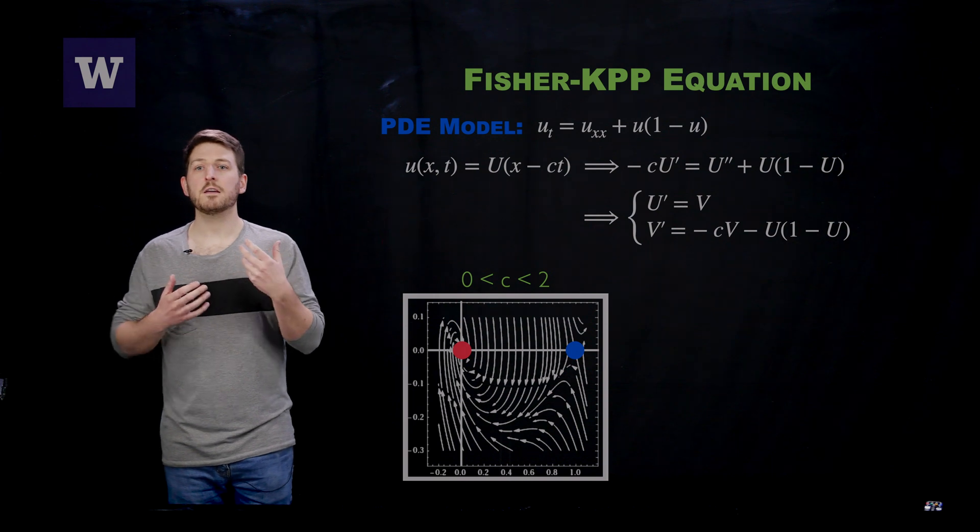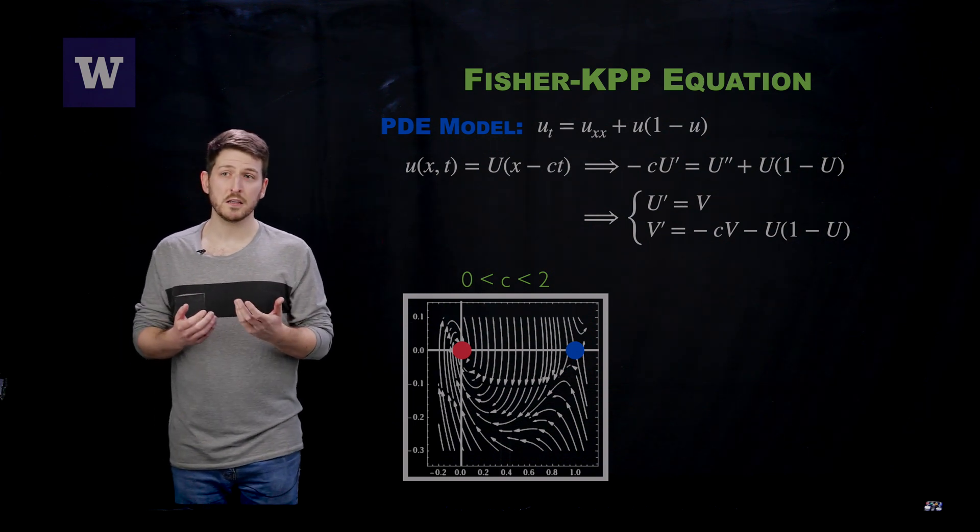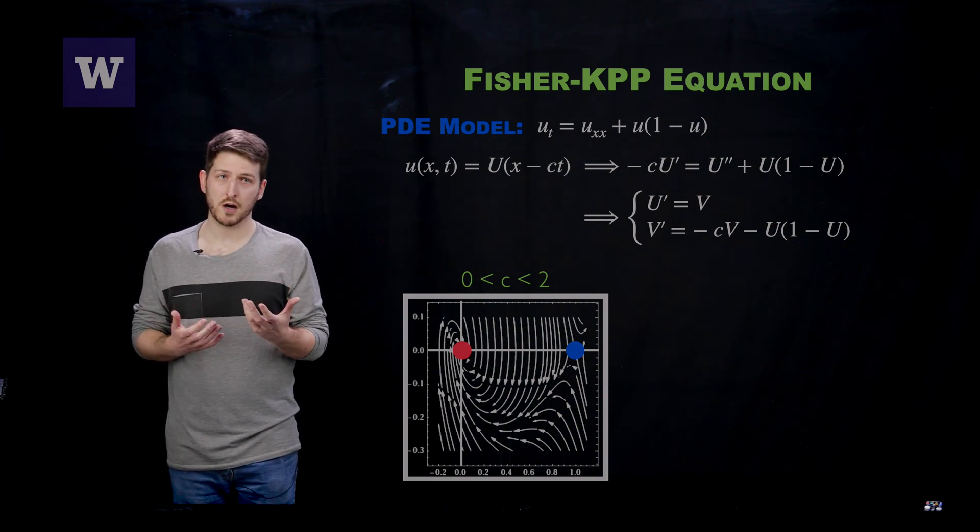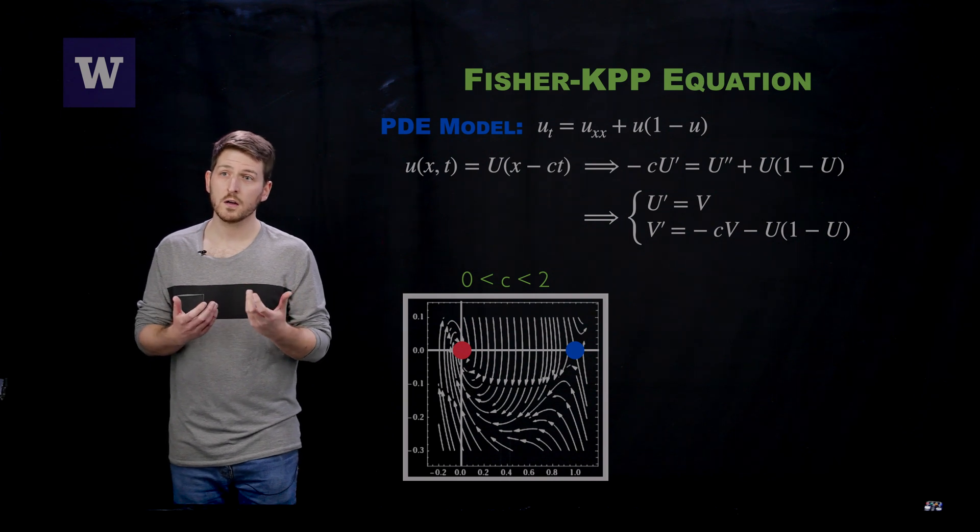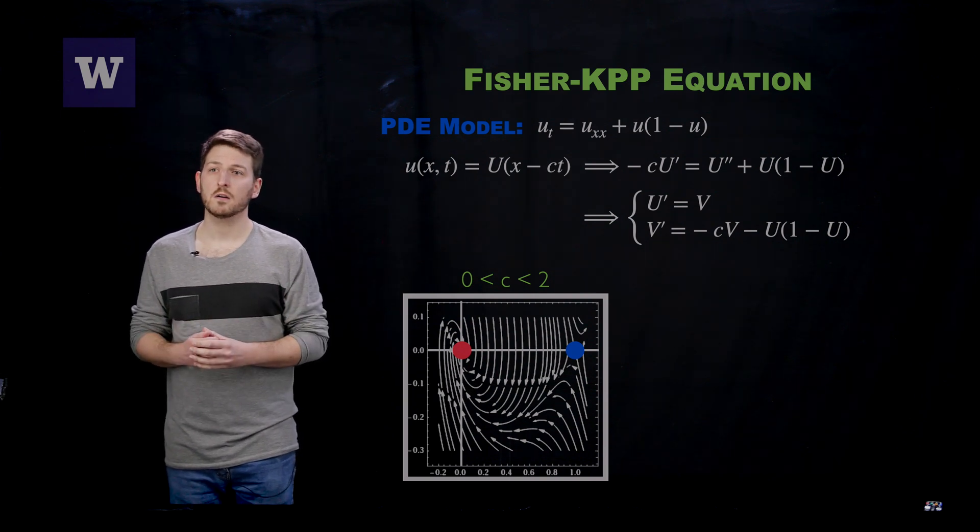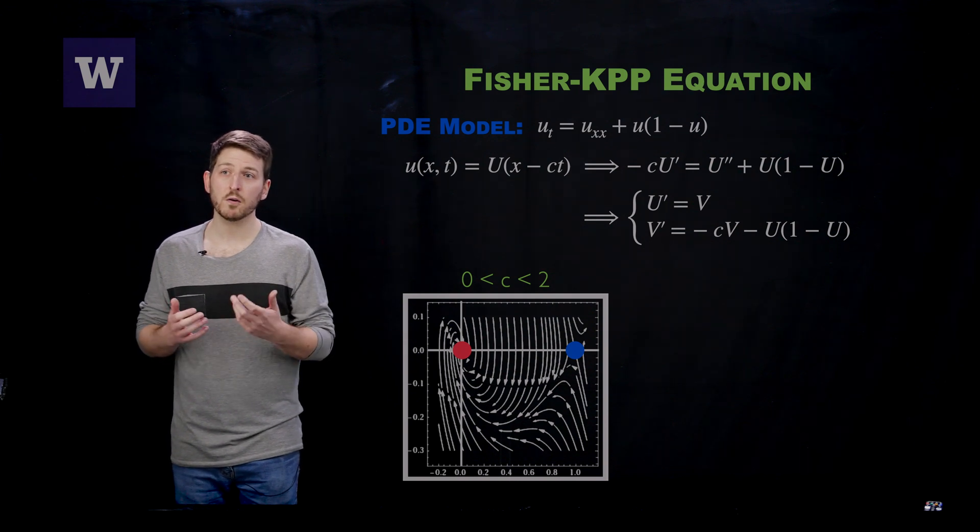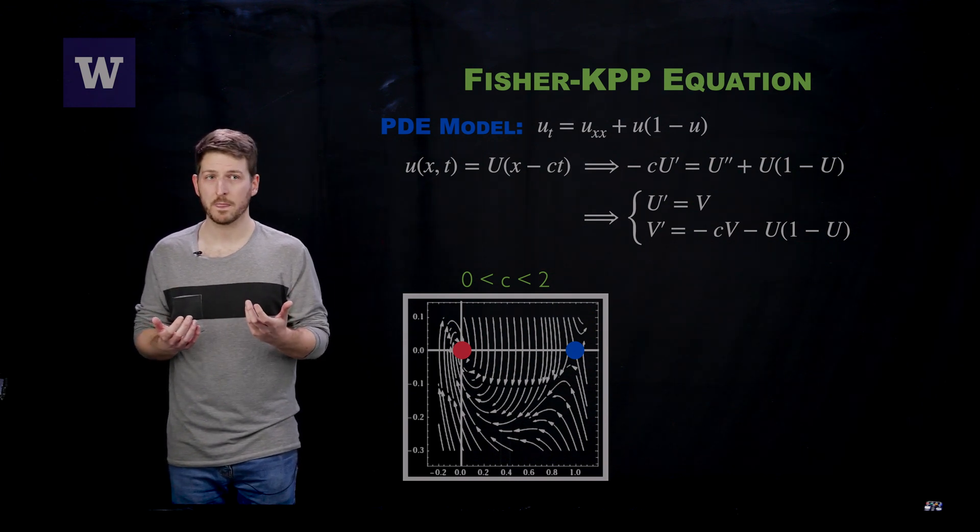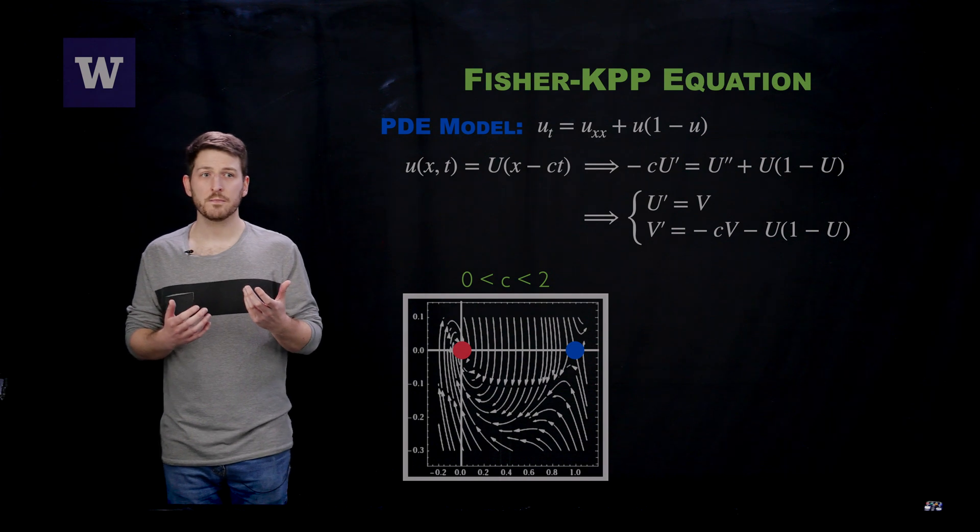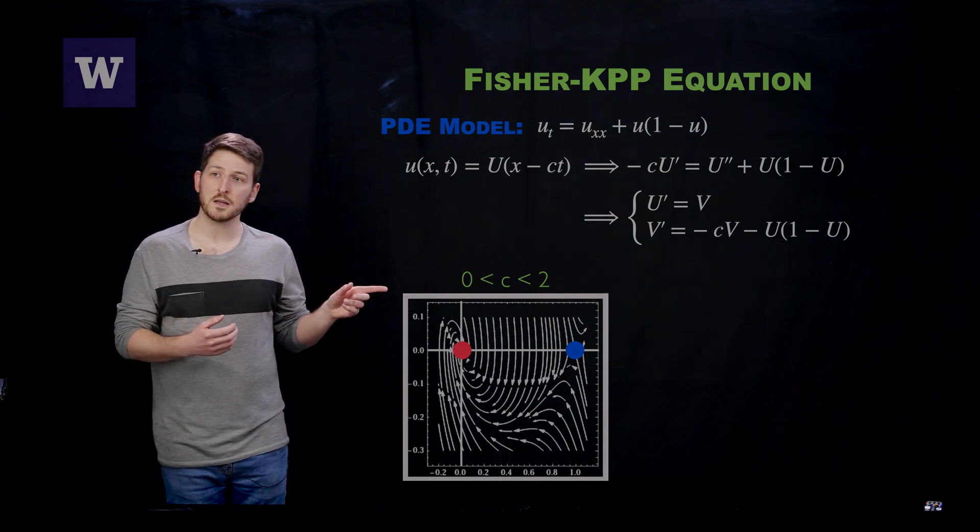The Fisher-KPP equation is typically used to model biological populations, and therefore, this would mean that our profile takes negative population densities, which becomes physically unrealistic. So in many cases, we can discard the speed of traveling waves between 0 and 2.